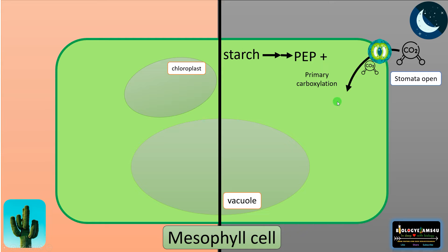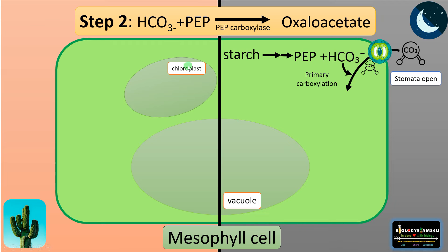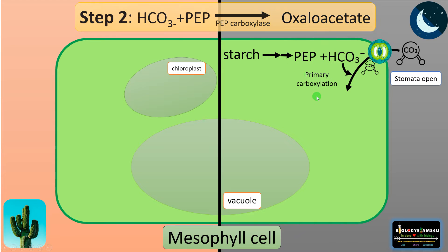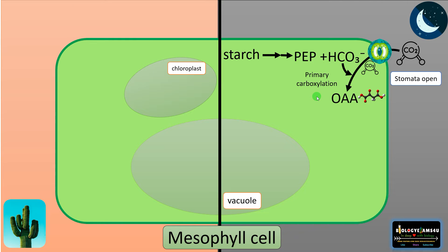The next step is primary carboxylation, or initial carbon fixation. Step two: carbon dioxide combines with PEP — phosphoenolpyruvate, which is a three-carbon compound — forming the four-carbon oxaloacetate. The enzyme involved is PEP carboxylase. Here, carbon dioxide combines with water forming bicarbonate, which then combines with PEP to form oxaloacetate, a four-carbon compound.